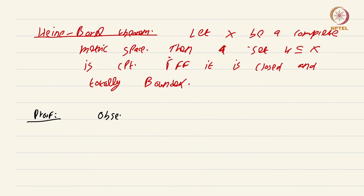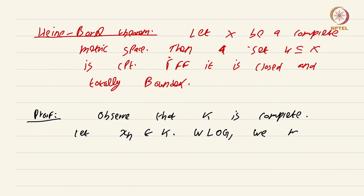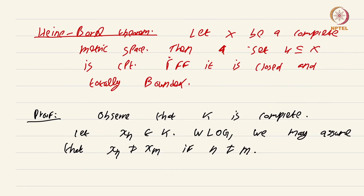First, observe that K is complete, simply because it is a closed subset of a complete metric space. Let x_n be a sequence in K. We are going to show it has a convergent subsequence, using the fact that compactness and sequential compactness coincide for metric spaces. Without loss of generality, we may assume x_n ≠ x_m whenever n ≠ m — just pass to a subsequence with distinct terms. If that is not possible, then x_n already has a convergent subsequence and the proof is done.